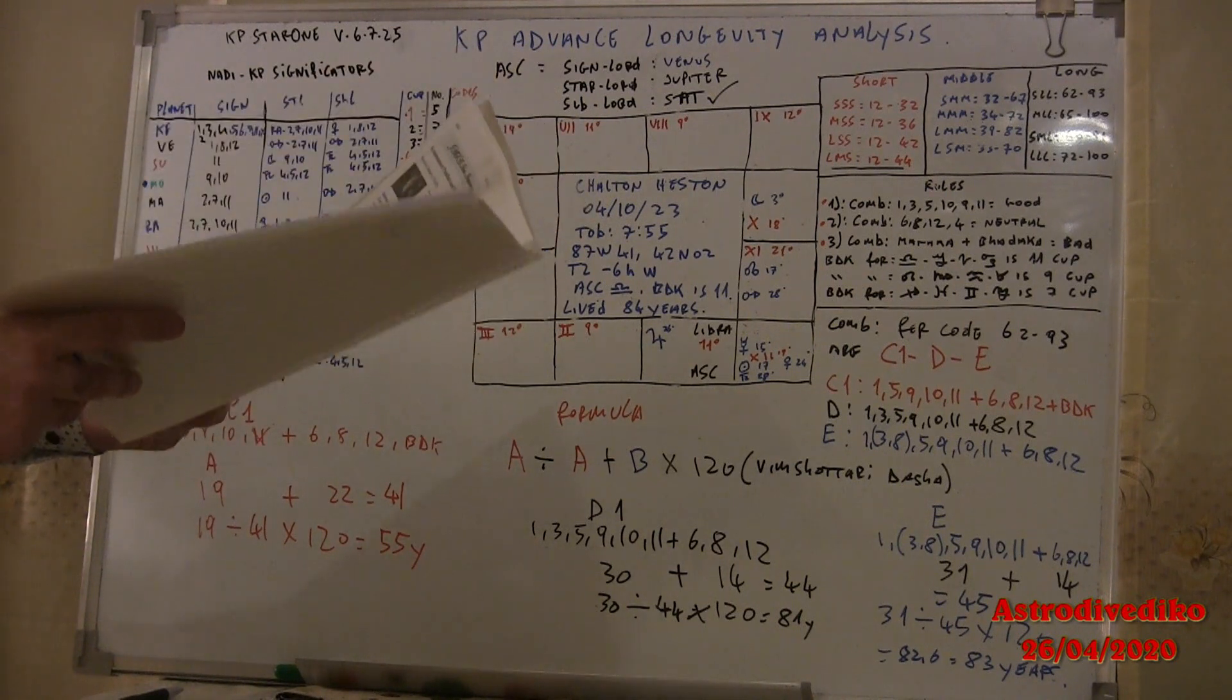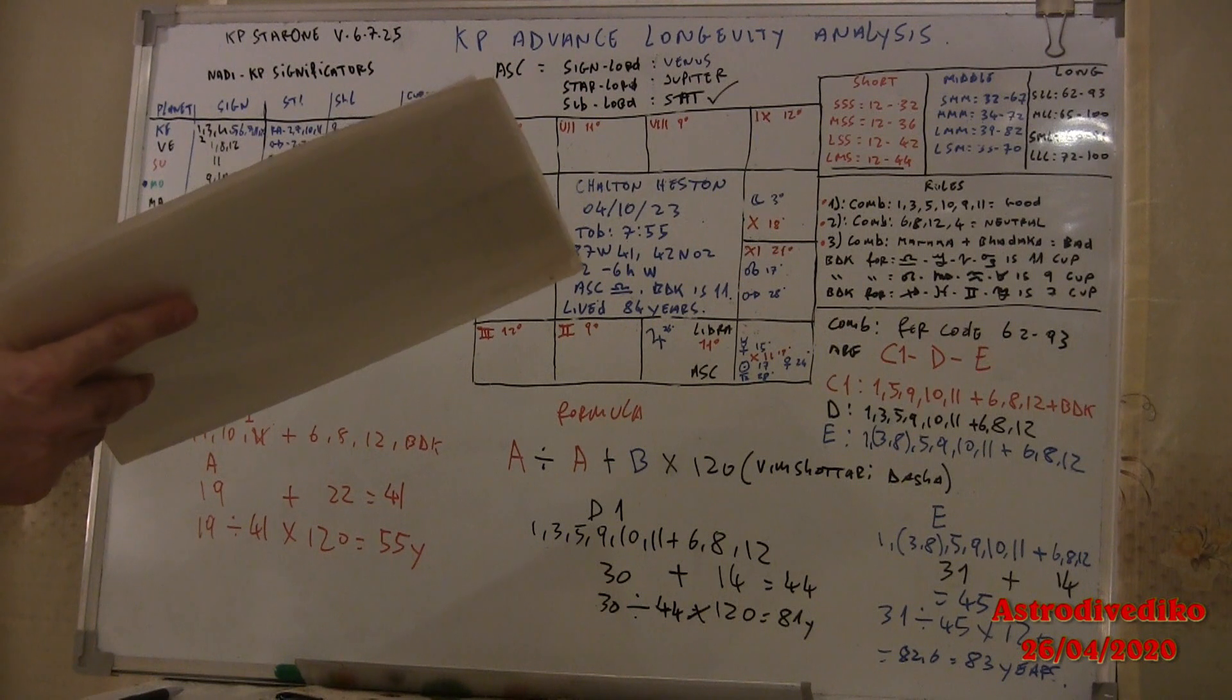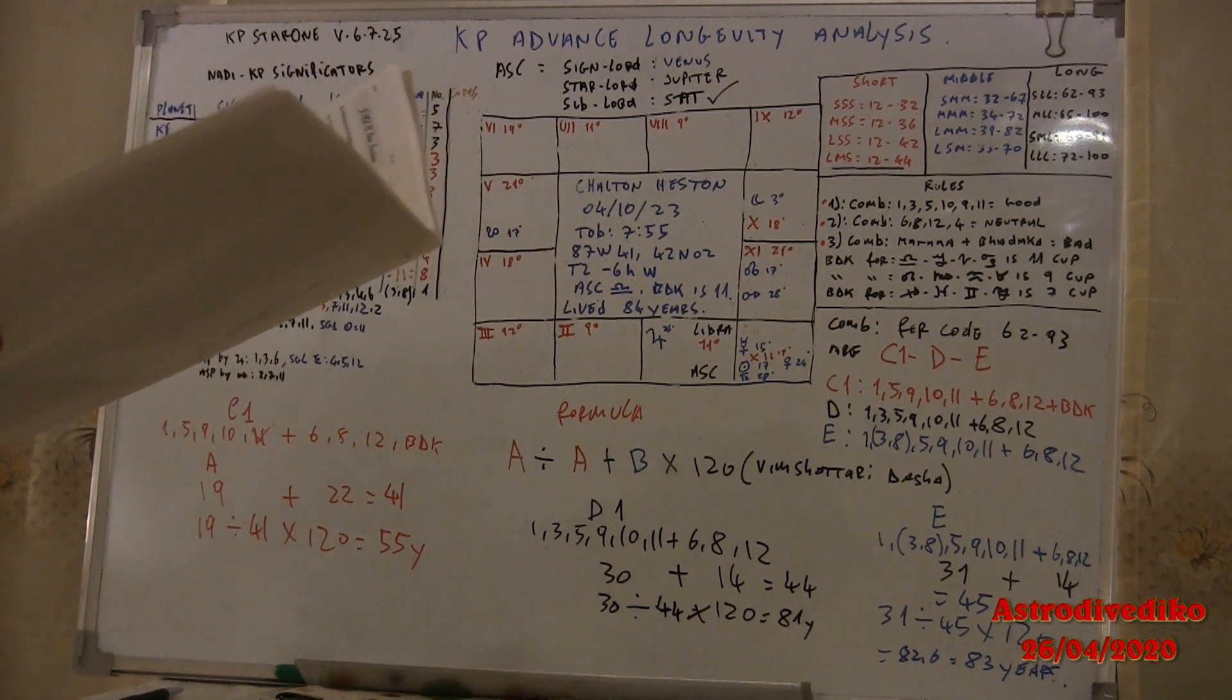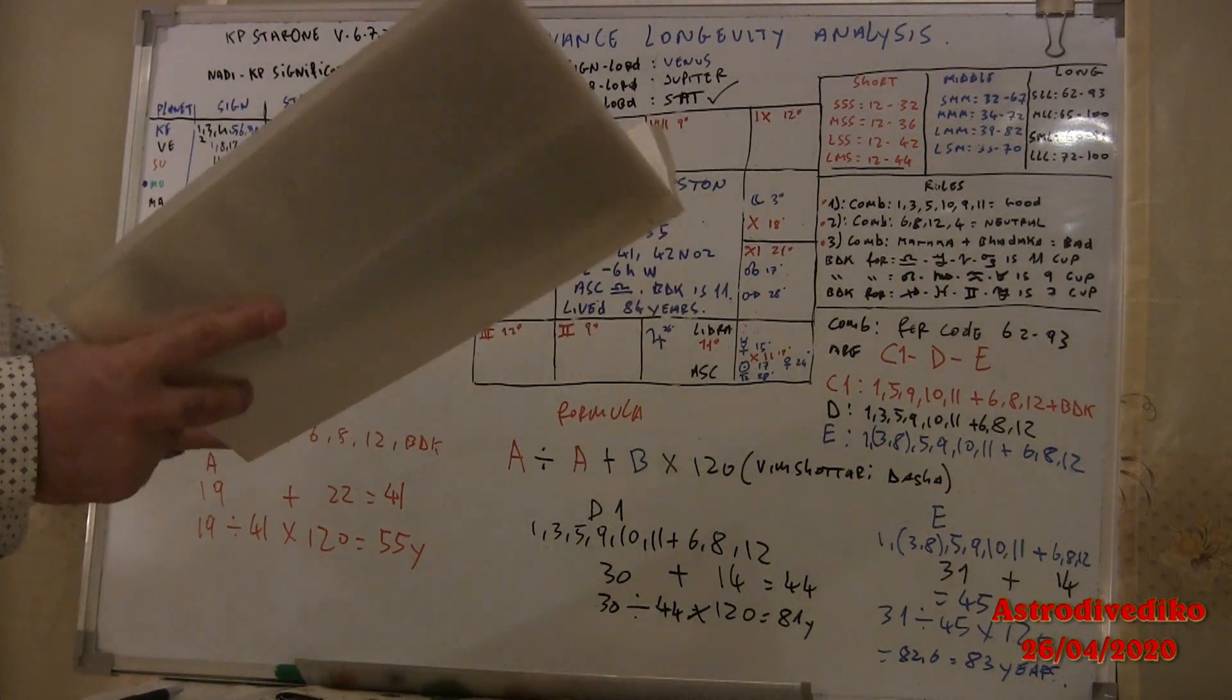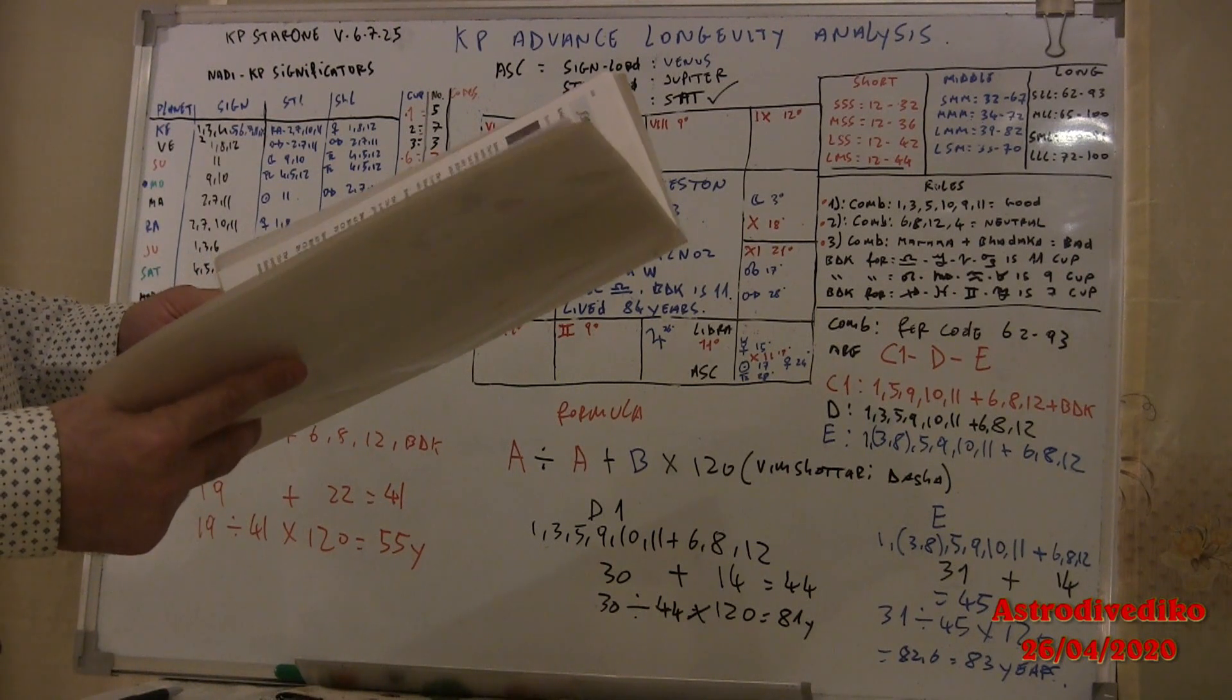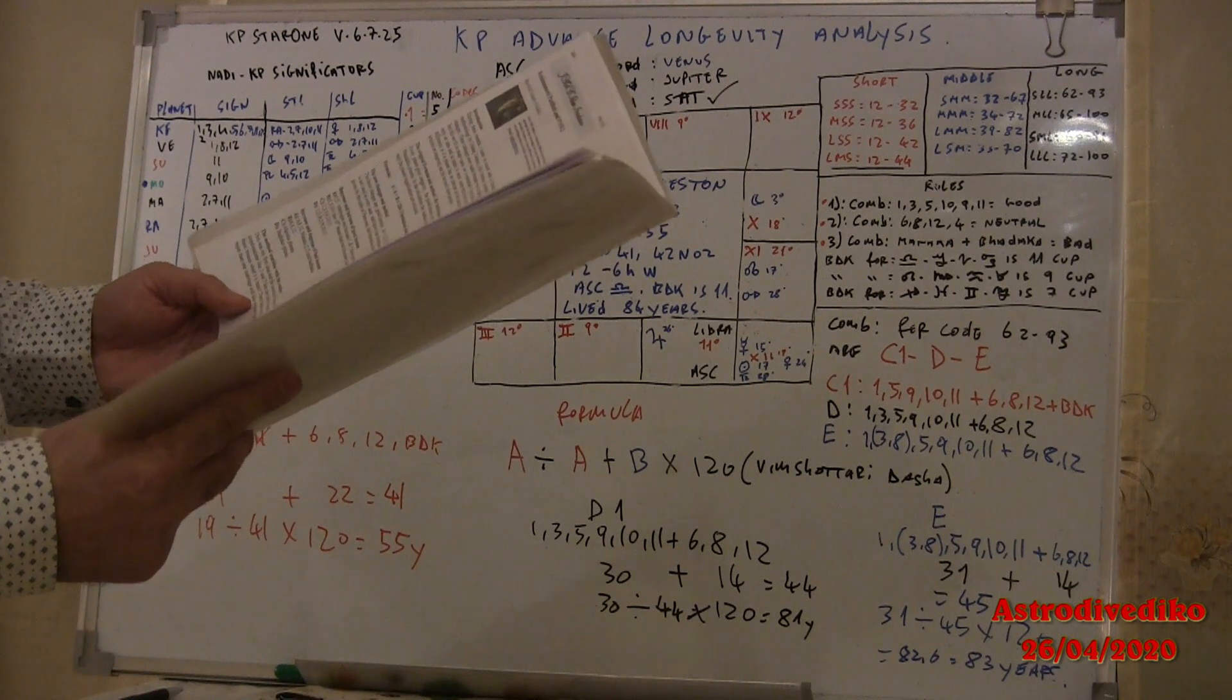This was my first idea, and the second was how can I combine them? In every KP horoscope, there are many combinations, like 2 and 7, that are bad for longevity and good for marriage. If more than one planet signify these houses, what does it mean?